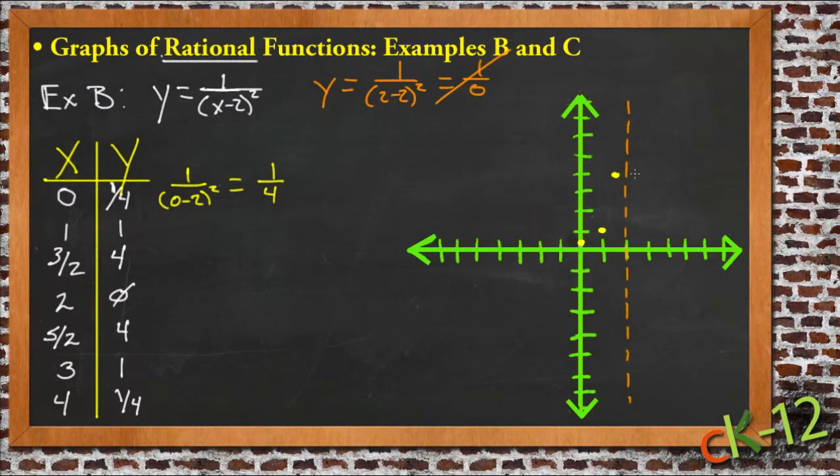If we go beyond that, if x is 2 and a half, then we get 4. We get 1 over (2.5 minus 2) squared gives us 1 over (1 half) squared, so 1 over 1 quarter. If I have 1 and I divide it into pieces 1 quarter each, I get 4 pieces. So if x is 2 and a half, then y is 4.